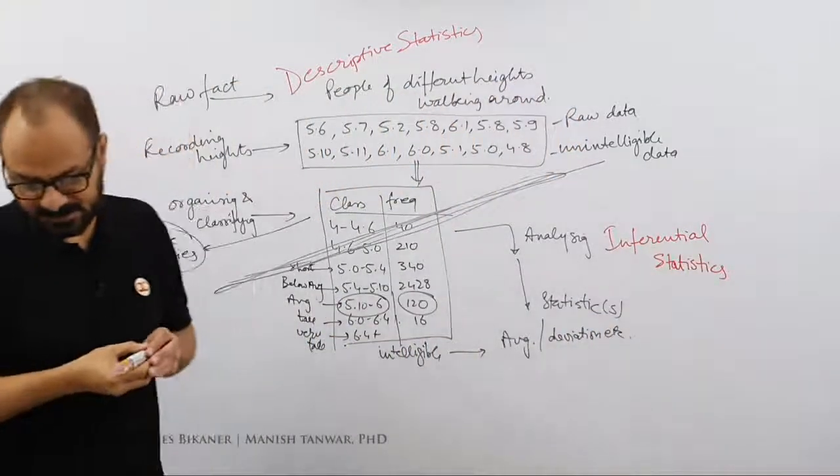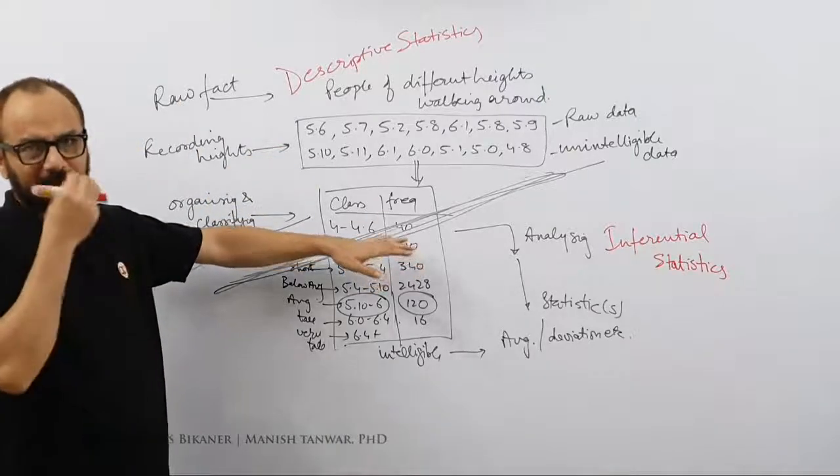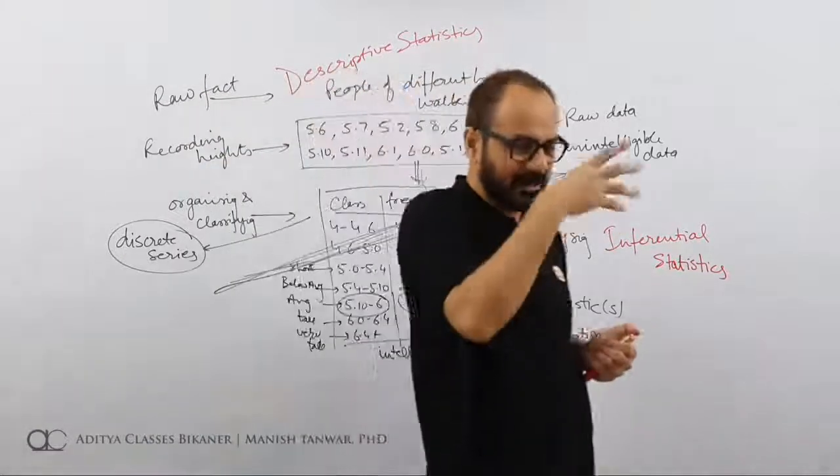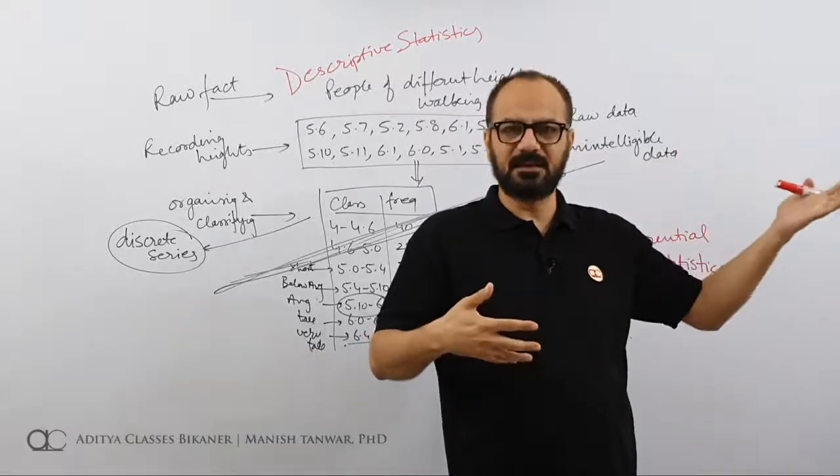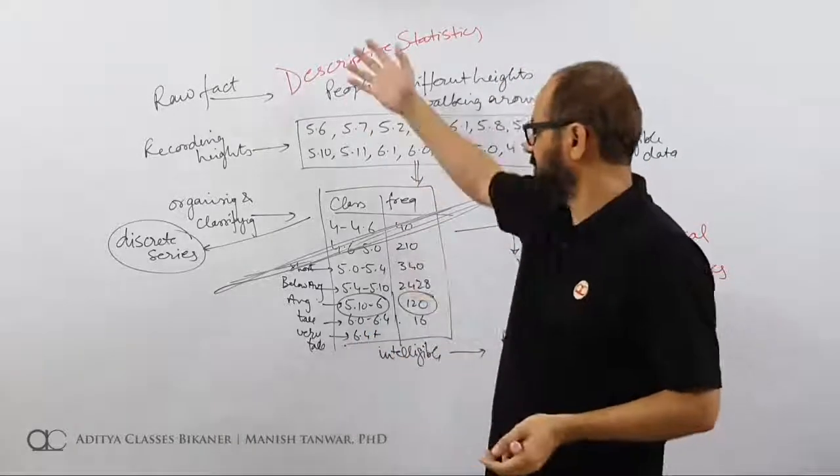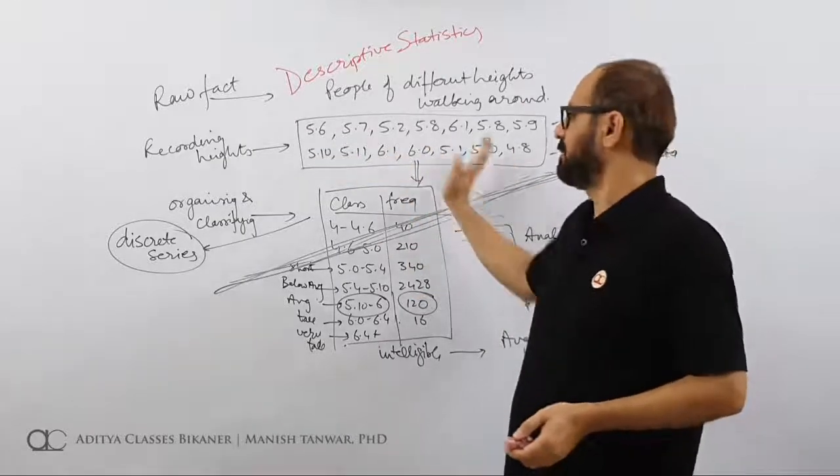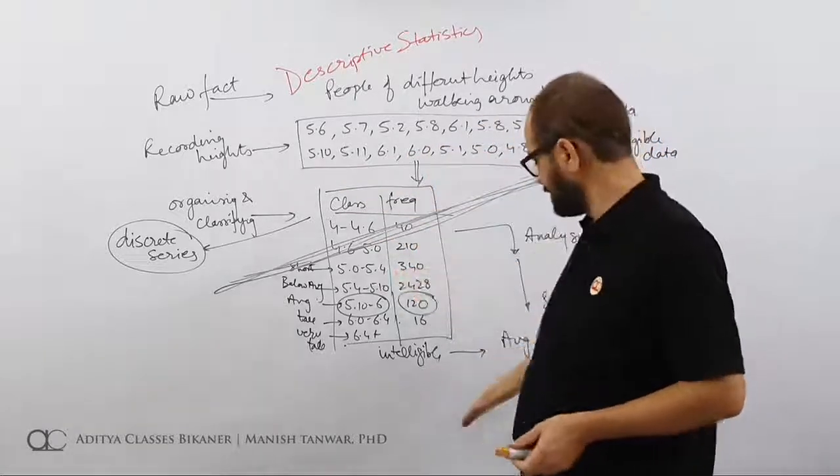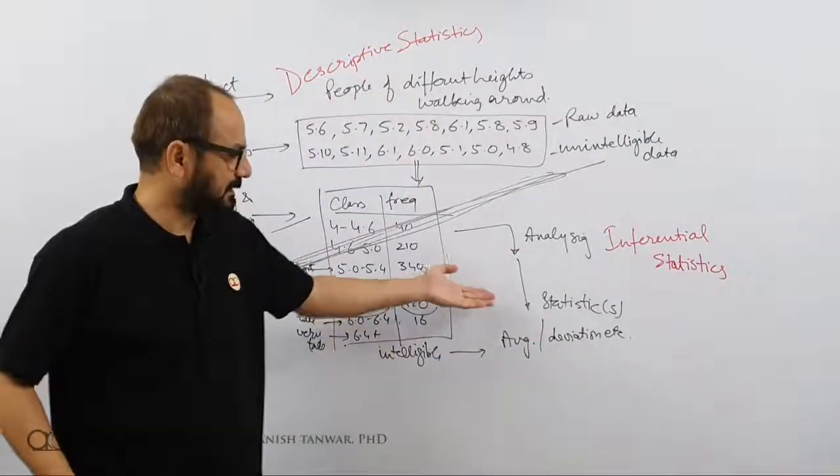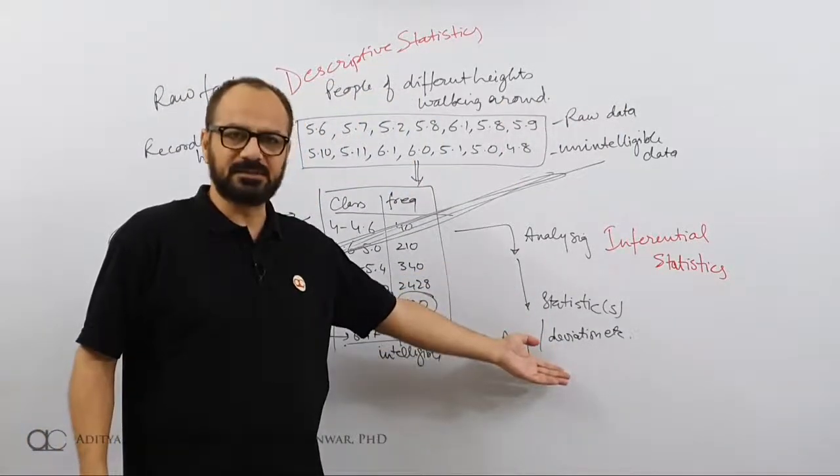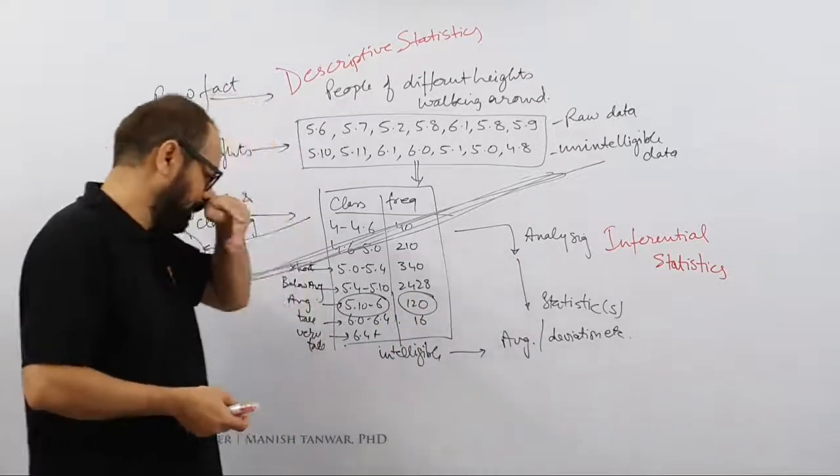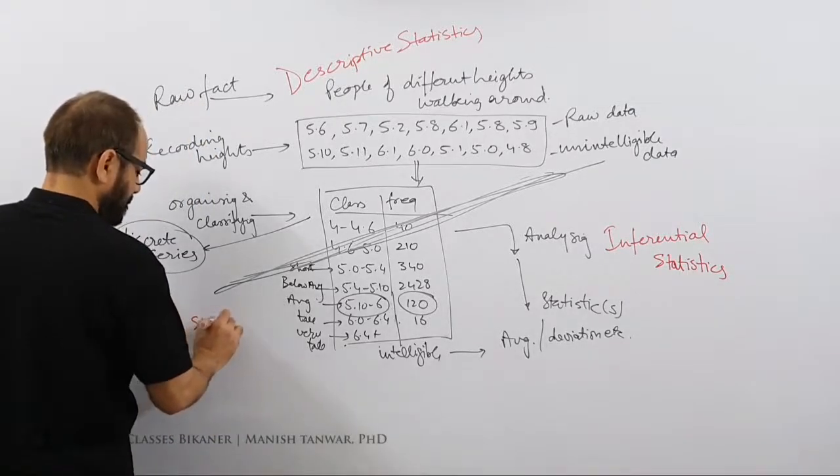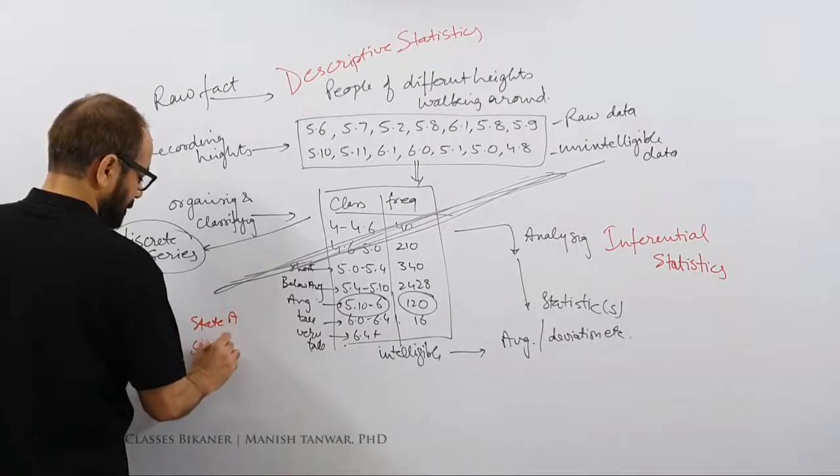So we have descriptive statistics and inferential statistics. The complete statistical process which we talked about last time - that starts with collection of data to conversion of meaningful information, meaningful statistics - that complete process has been divided into two. One has been put into just recording the facts and reporting them. While the second section is finding out statistics, finding out averages, finding out deviations, interpreting them.